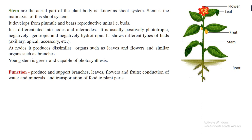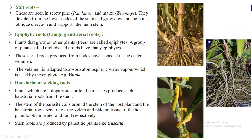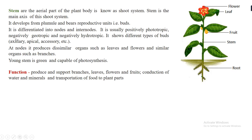Stems are the aerial part of the plant body — the shoot system. The stem is the main axis and bears flowers, leaves, and fruits. Stems develop from the plumule region of the germinating seed and are differentiated into nodes and internodes. The node is the point on the stem where leaves arise, and the internode is the region between two nodes.